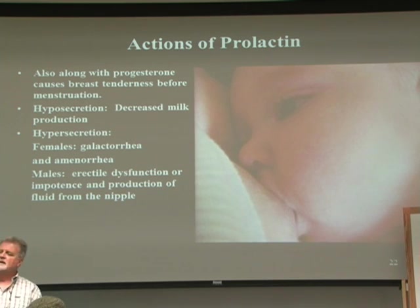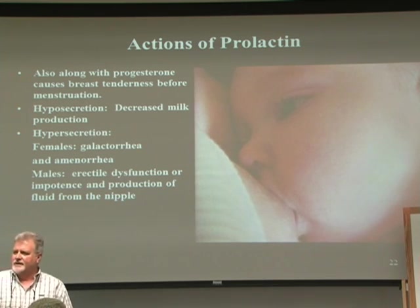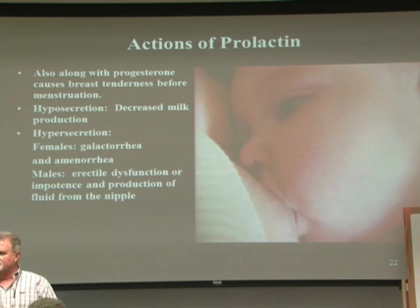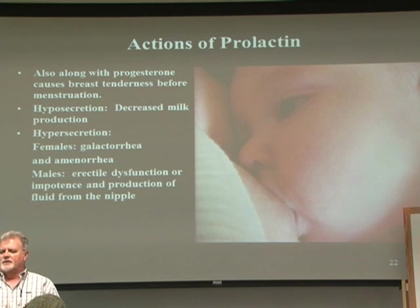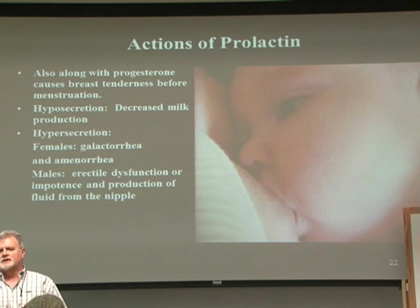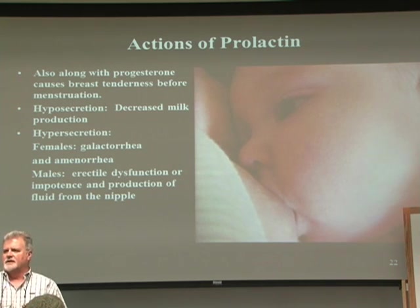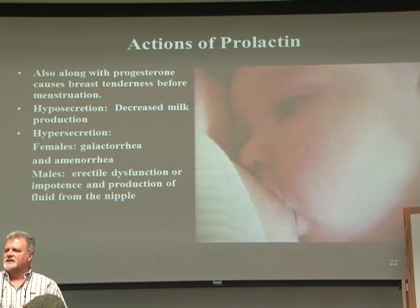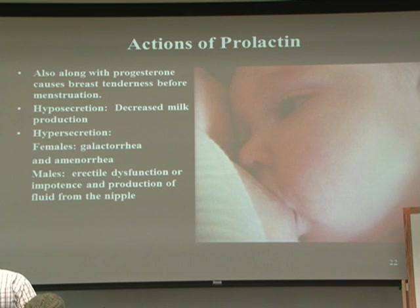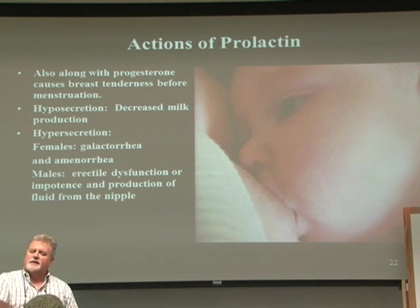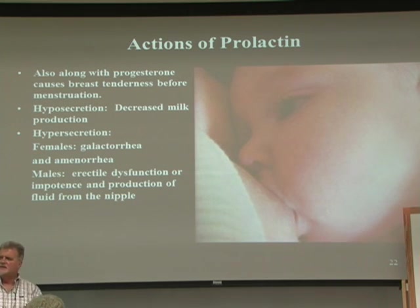Toward the end of the ovarian cycle, right before a woman starts her period, there's a drop in estrogen and progesterone and an elevation in prolactin. Some women experience breast tenderness and increased fibrous cysts near the end of their cycle. So prolactin is still present in non-pregnant women, just at very low levels.